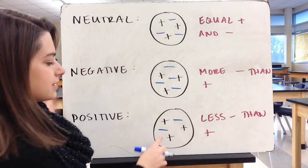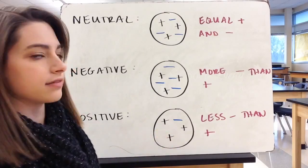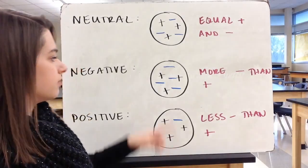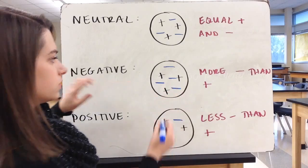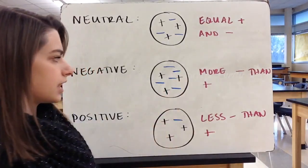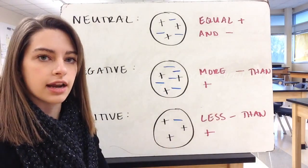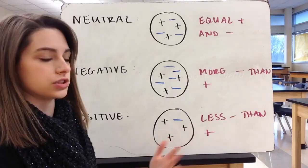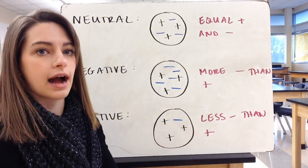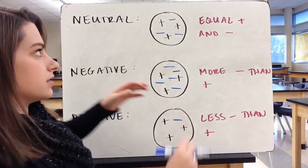If I wanted this to be positive 2, I could have just one negative charge. If I wanted this to be negative 2, I could add another electron. So depending on how many negative charges you have would depend on how negative or how positive your overall atom is.